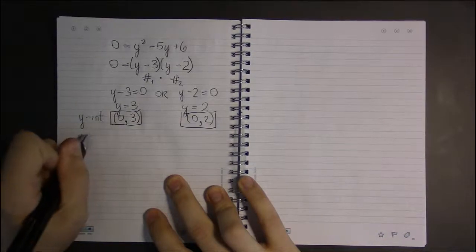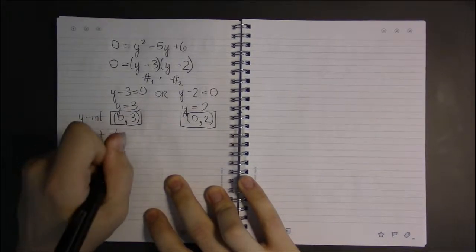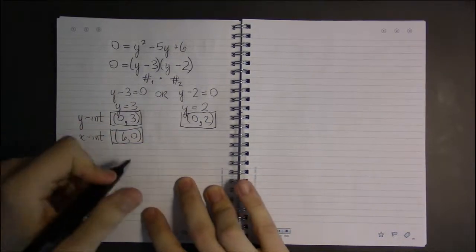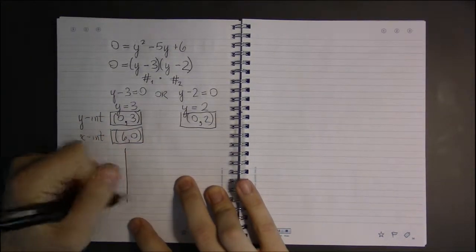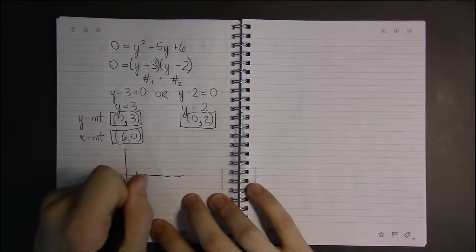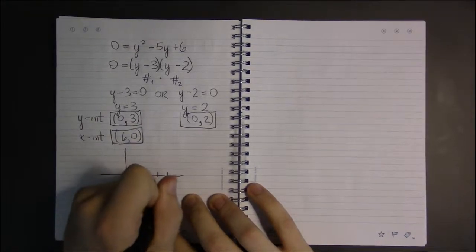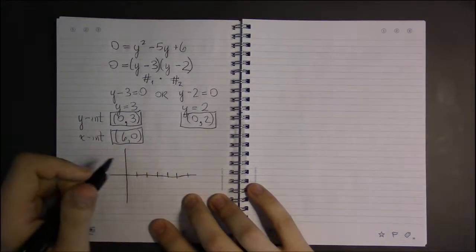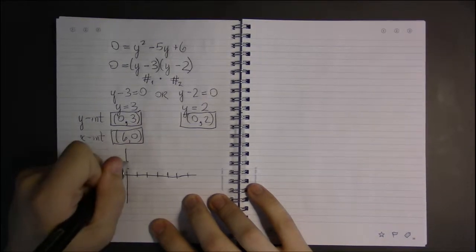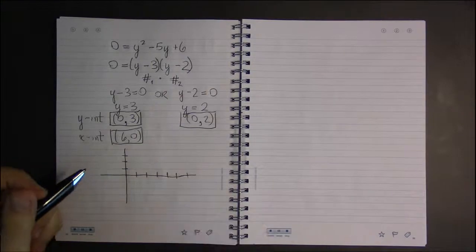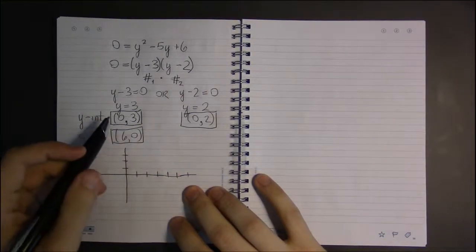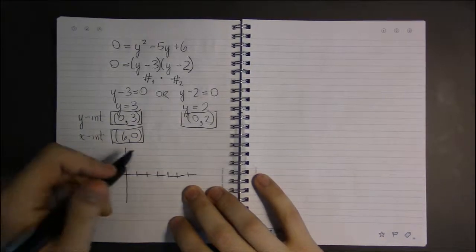So we have two y-intercepts. Both will have x equals 0 because they're y-intercepts. And with these two, that's it. These are our y-intercepts. And our x-intercept was the point (6,0). If you're curious, the rough sketch of the graph will look something like this.